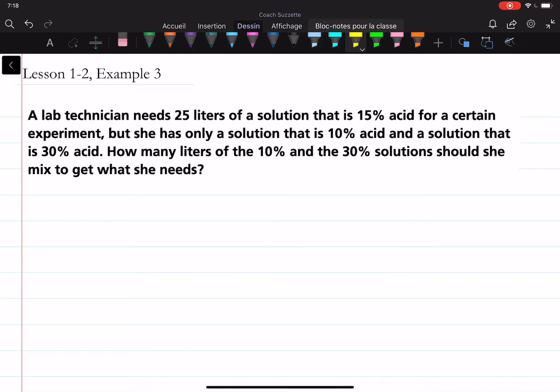Hello and welcome back. Let's learn how to solve this problem. We are given a lab technician needs 25 liters of a solution that is 15% acid for a certain experiment, but she has only a solution that is 10% acid and a solution that is 30% acid. How many liters of the 10% and the 30% solutions should she mix to get what she needs?